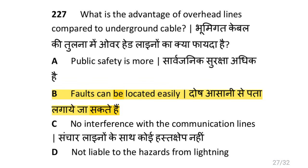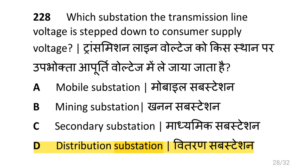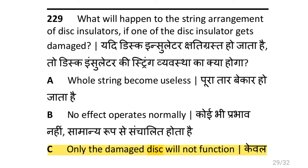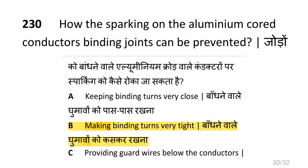What is the advantage of overhead lines compared to underground cables? That is faults can be located easily. Which substation steps down the transmission line voltage to consumer supply voltage? That is distribution substation. What will happen to the string arrangement of Dix insulator if one gets damaged? That is only the damaged Dix will not function. How can sparking on aluminum conductor binding joints be prevented? By making binding turns very tight.